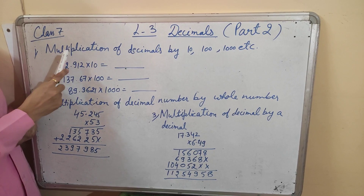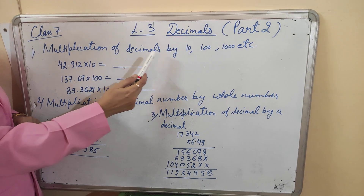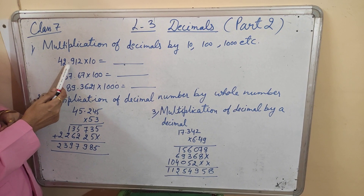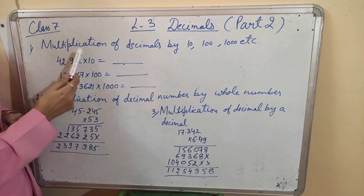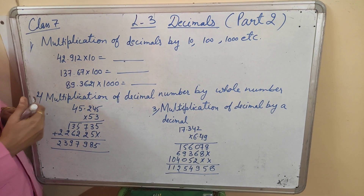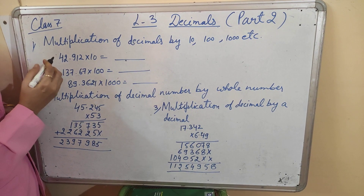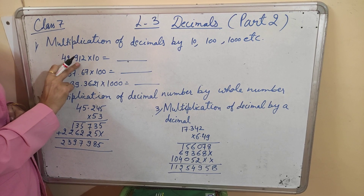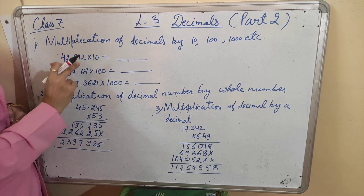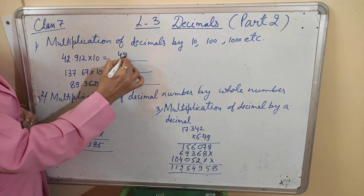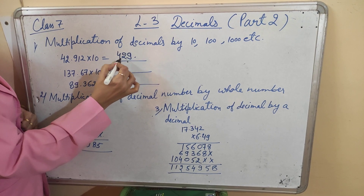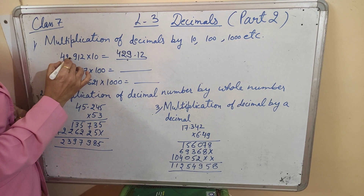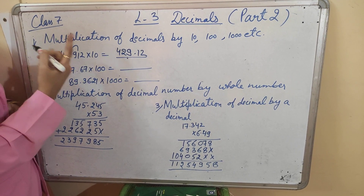First rule: when we have to multiply a decimal number with 10, 100, or 1000, we have to shift the decimal towards the right side 1 digit when we multiply by 10. Here the decimal number is 42.912 multiplied by 10. So the answer is 429.12. The decimal moves towards the right side 1 place.